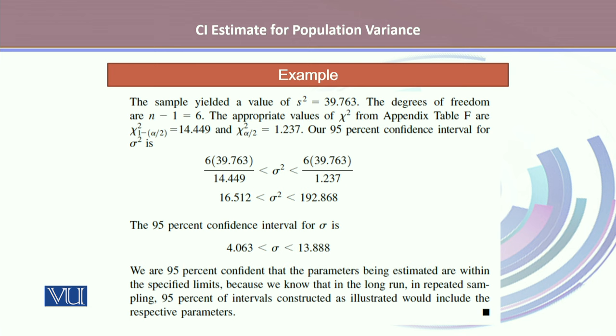We can interpret this confidence interval as we are 95% confident that the parameters being estimated are within the specified limits, because we know that in the long run, in repeated sampling, 95% of the intervals constructed as illustrated would include the respective parameter.